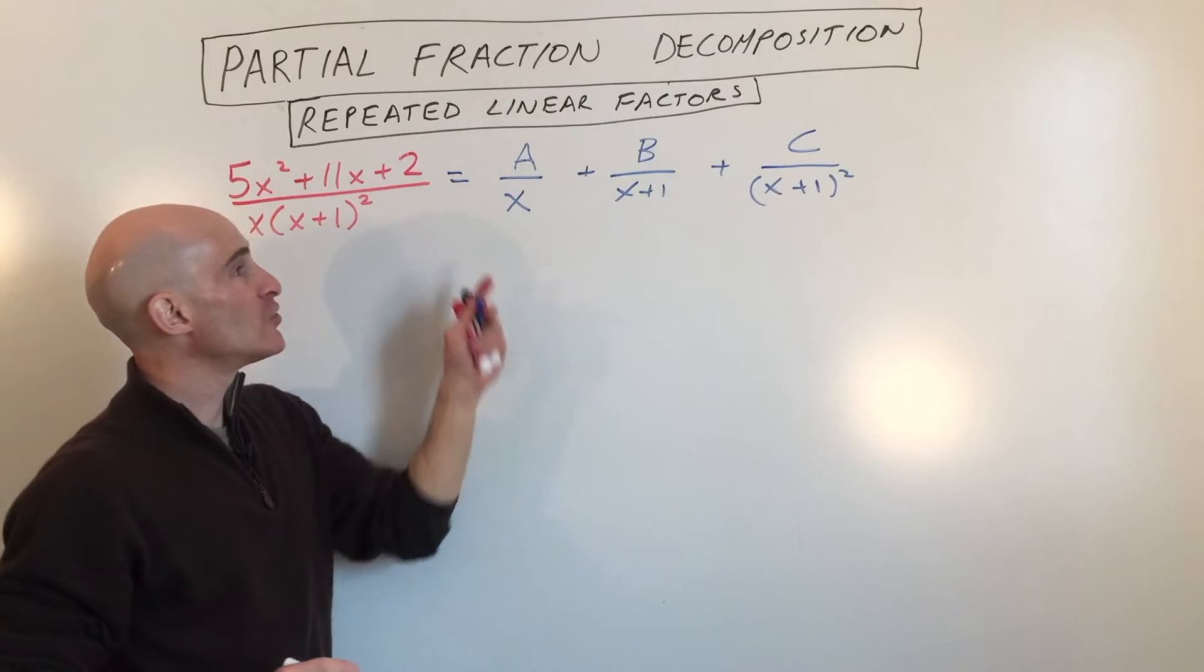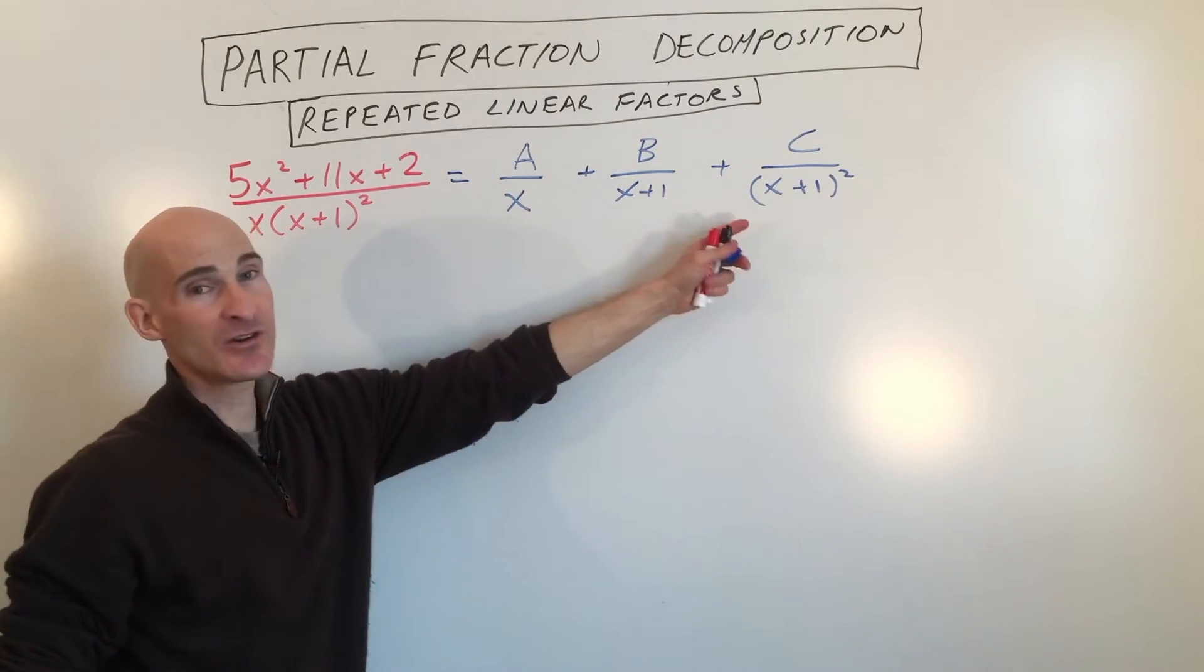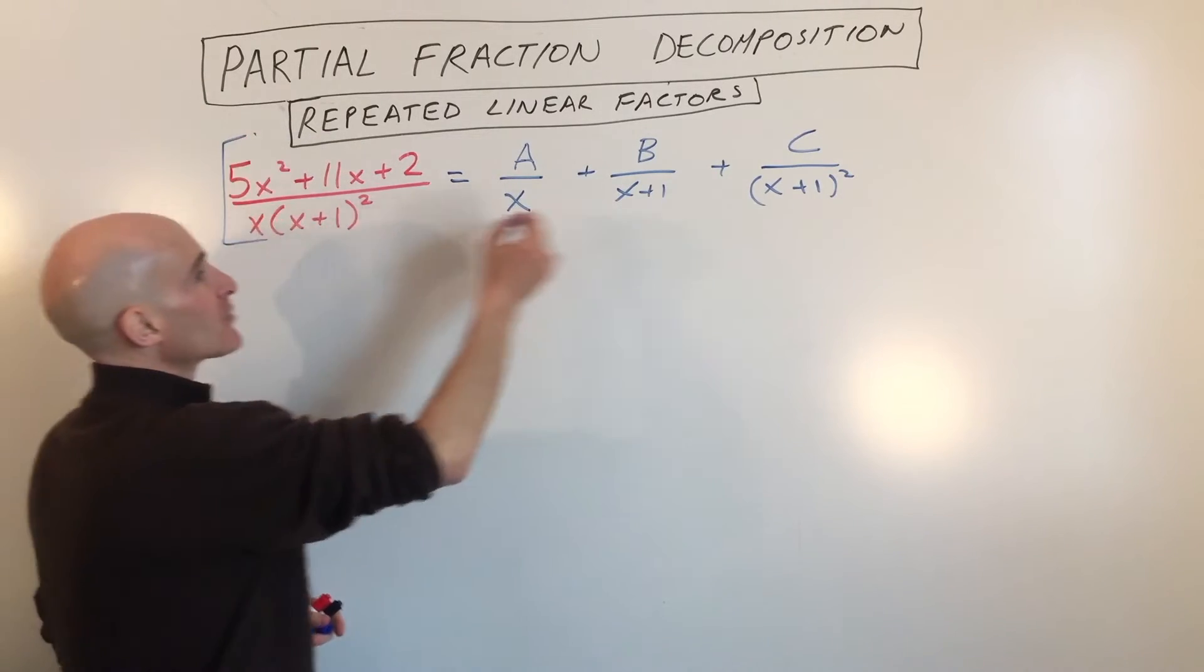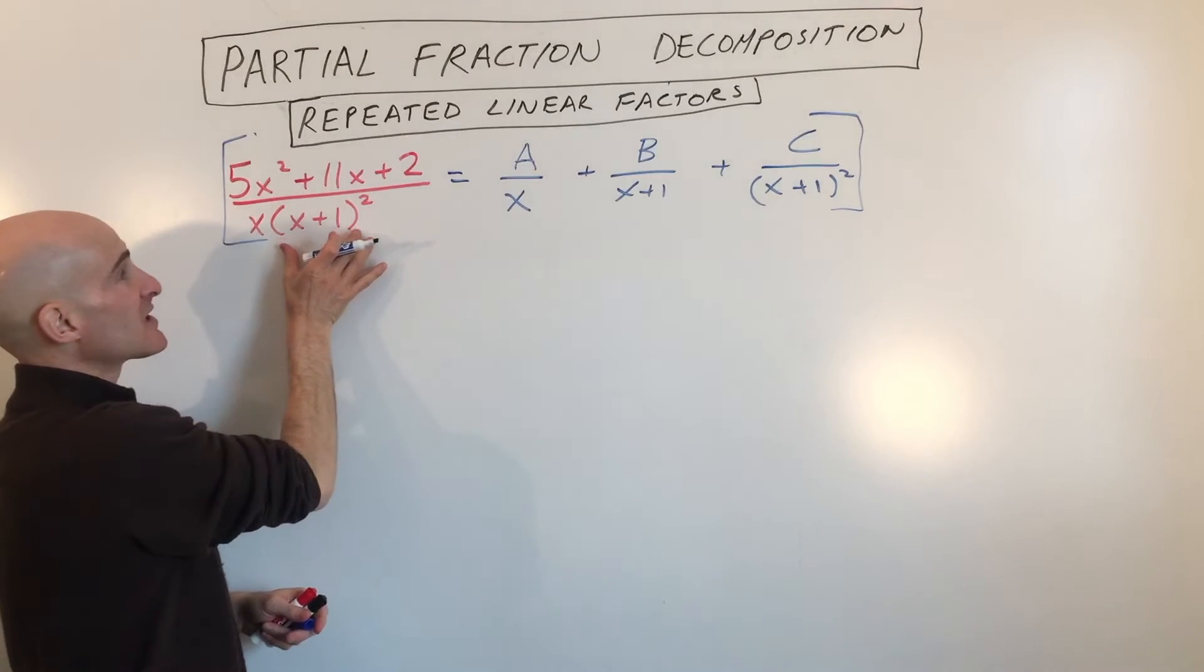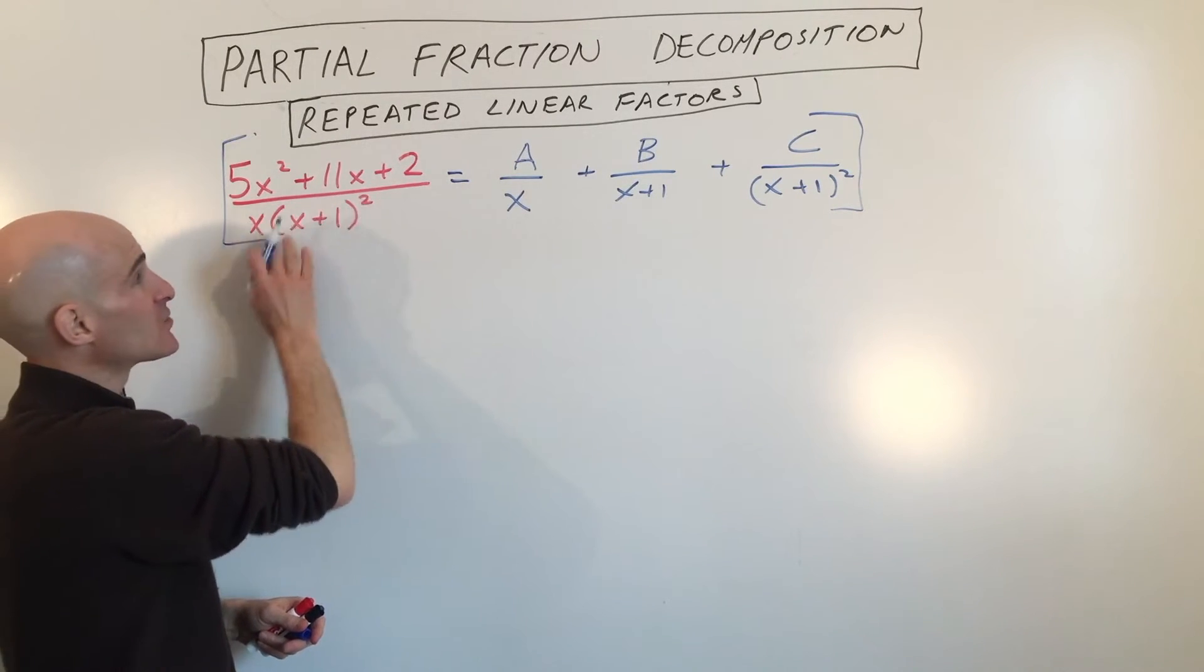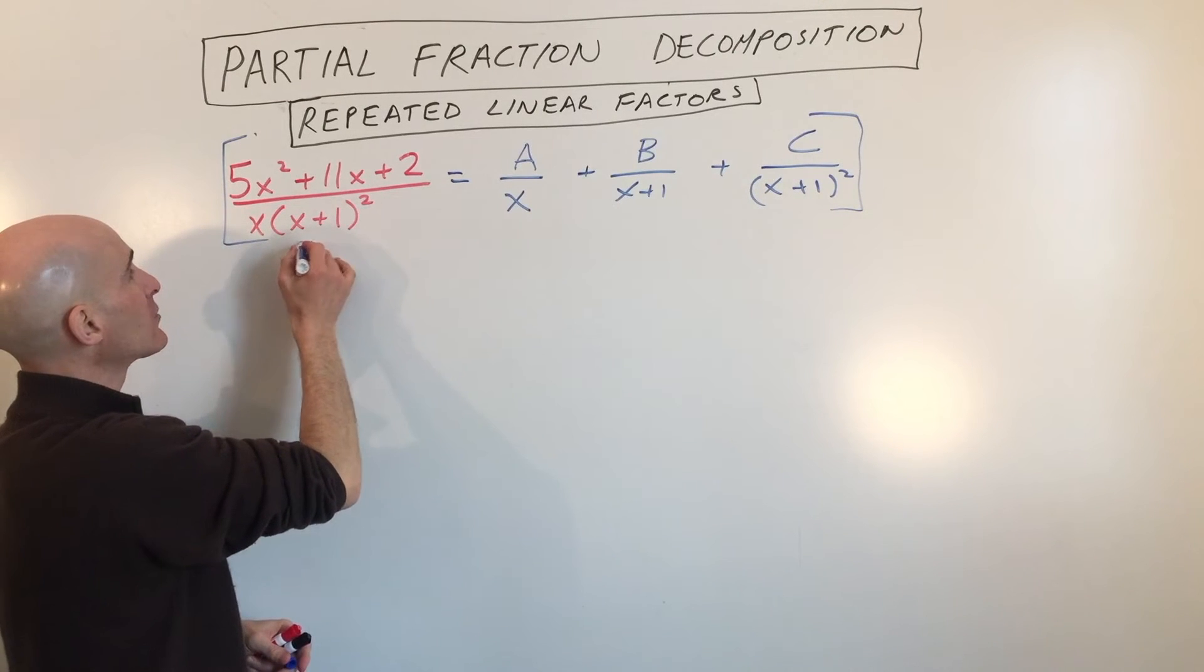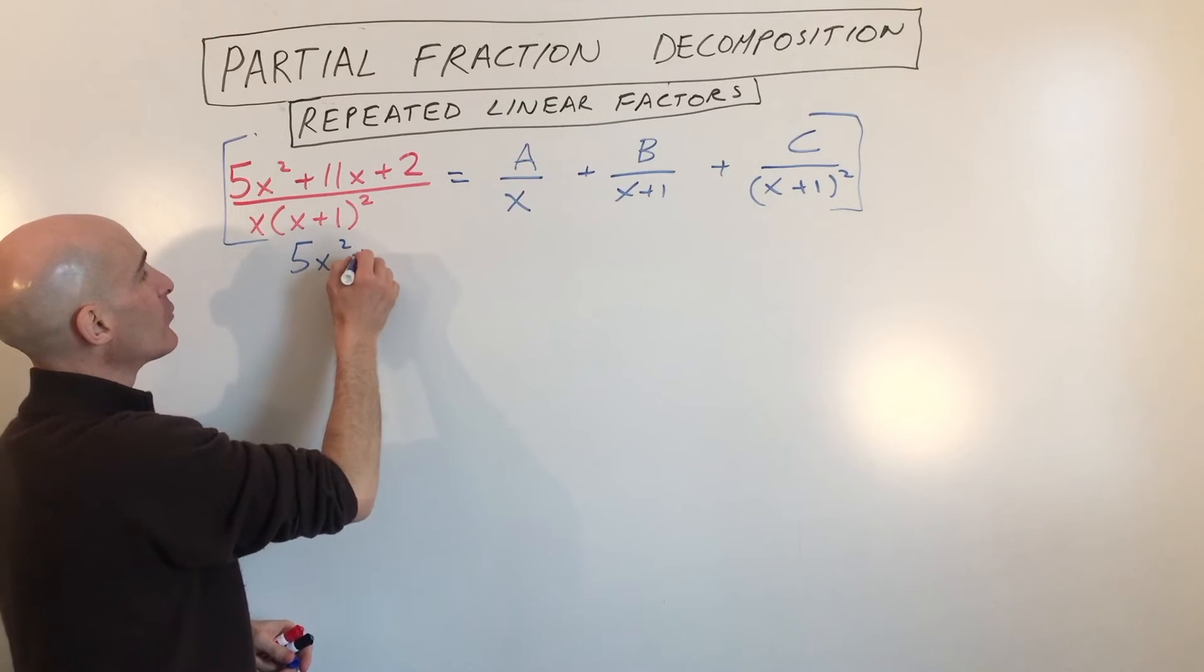Okay, so now all we have to do is we just have to clear the denominators and solve this equation. So we're going to multiply the left and the right sides, the entire equation, by the common denominator. This is the common denominator here, x times x plus 1 squared. So we multiply each of these fractions by that quantity, we clear the denominators, and we're left with